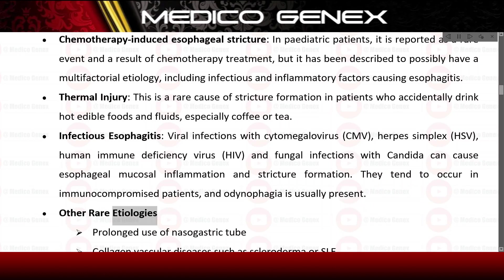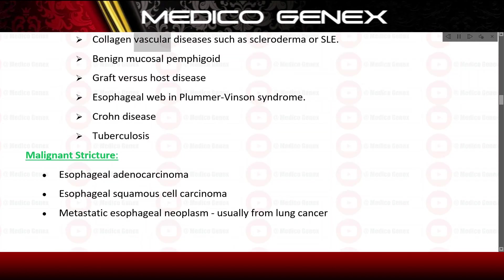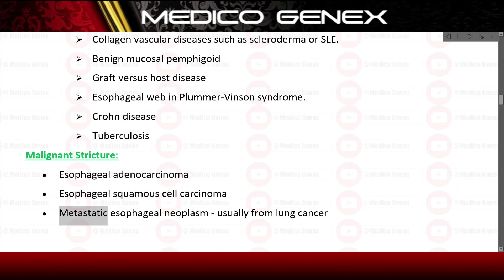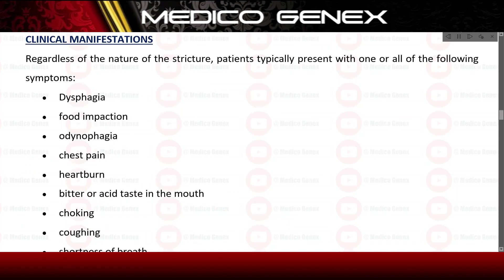Other rare etiologies include prolonged use of nasogastric tube, collagen vascular diseases such as scleroderma or SLE, benign mucosal pemphigoid, graft versus host disease, esophageal web in Plummer-Vinson syndrome, Crohn's disease, and tuberculosis. Malignant strictures include esophageal adenocarcinoma, esophageal squamous cell carcinoma, and metastatic esophageal neoplasm, usually from lung cancer.